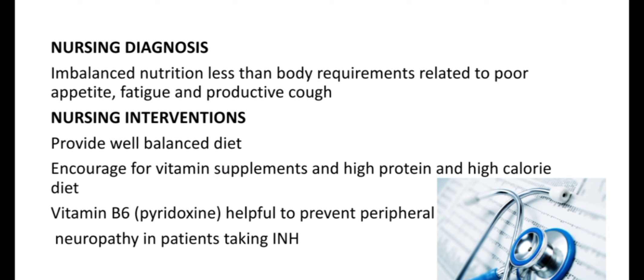Nursing diagnosis — nutrition imbalance, less than body requirements, related to poor appetite, fatigue, and productive cough: the nurse should provide a well-balanced diet, encourage vitamin supplements, and promote a high-protein, high-calorie diet. Vitamin B6 (pyridoxine) is helpful to prevent peripheral neuropathy in patients taking INH (isoniazid).